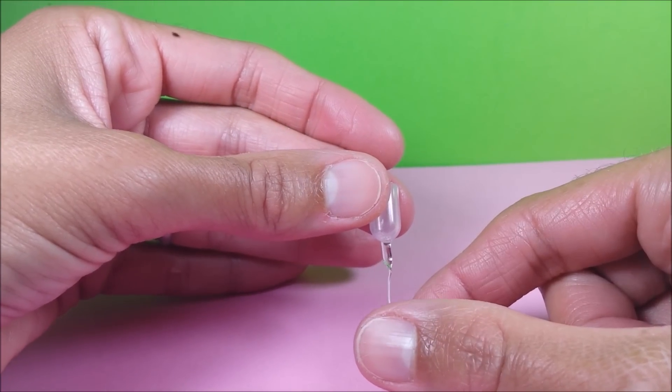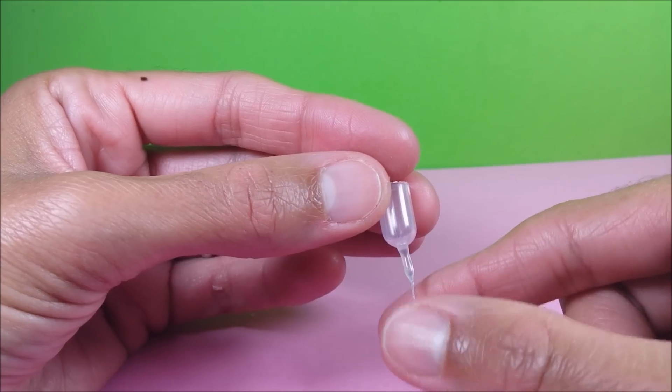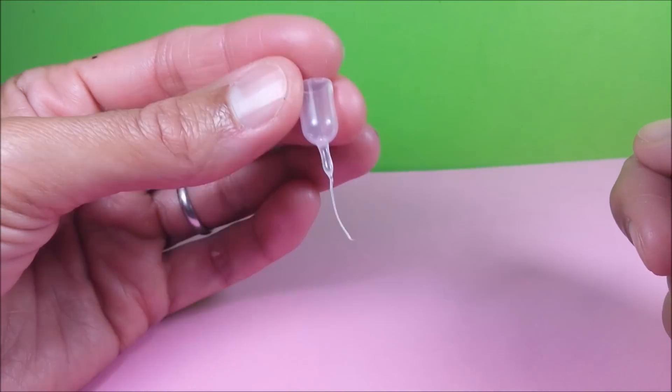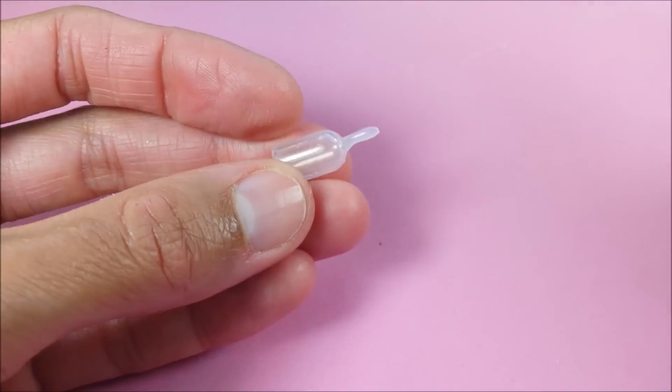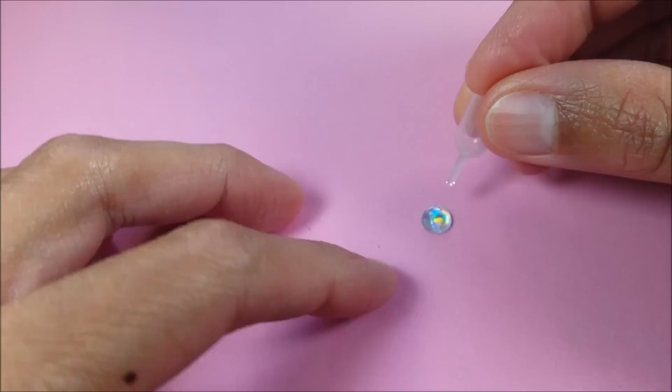I'm just tugging it down slowly till I get the shape that I like. If you don't like it, you can pop it off and try again. I add a little bit of hot glue to the bottom.